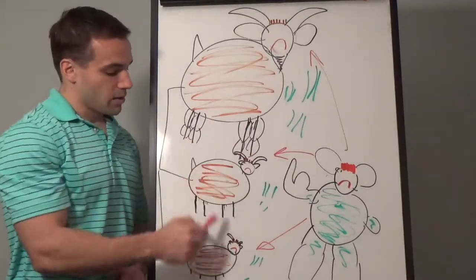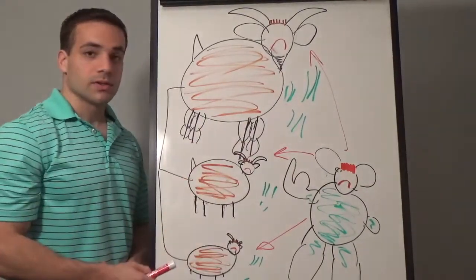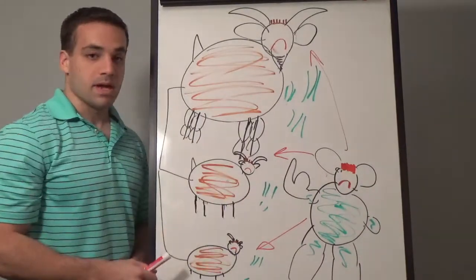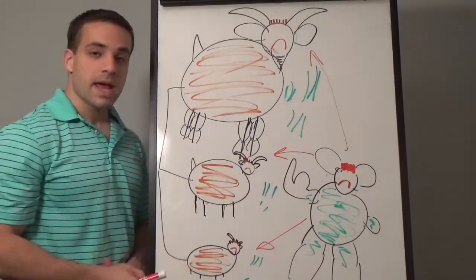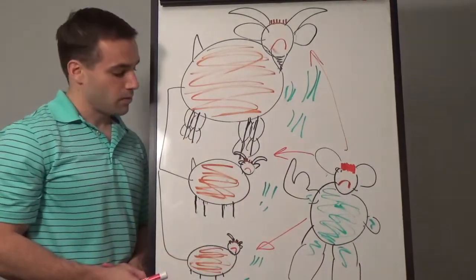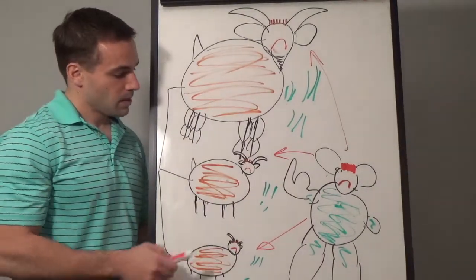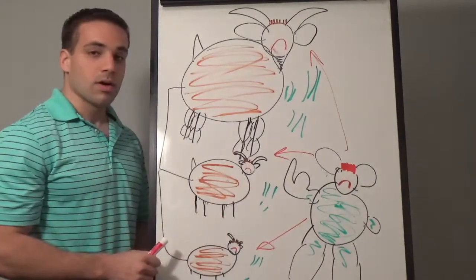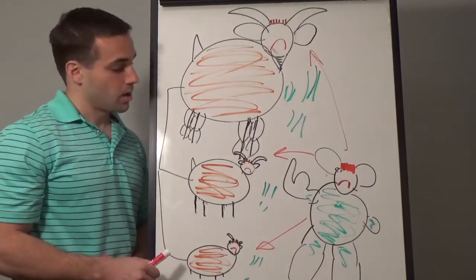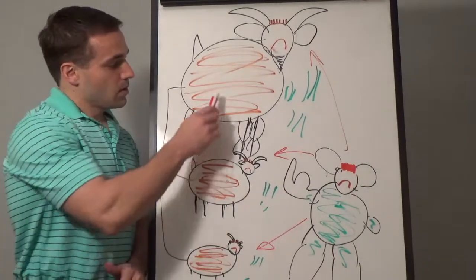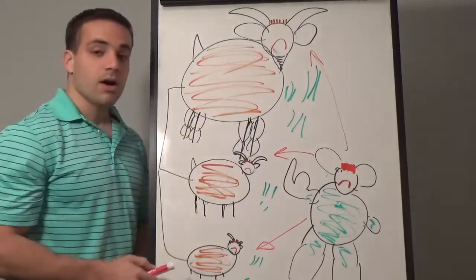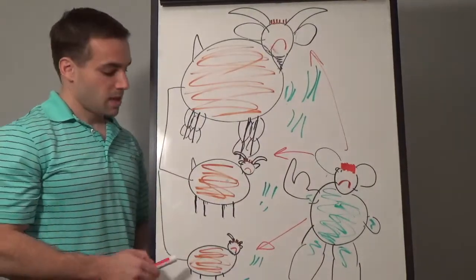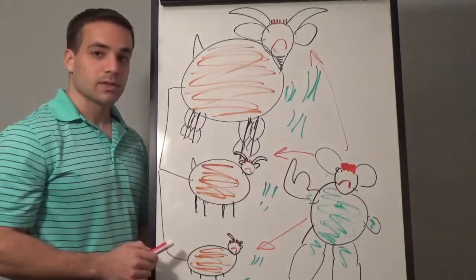There are three goats. There is a big goat, a medium goat, and a small goat. The medium and small goats are not strong. The three goats are family. They are siblings.